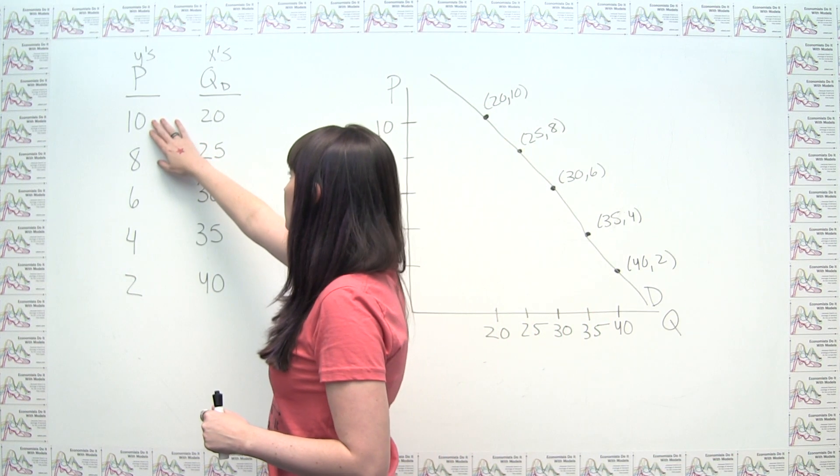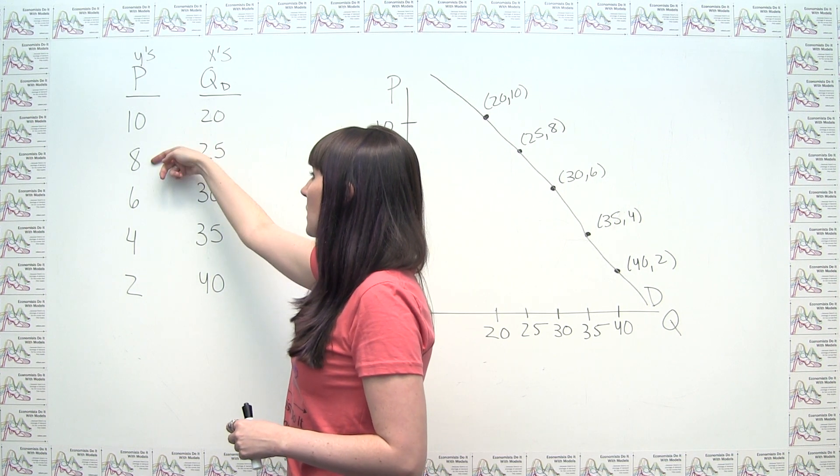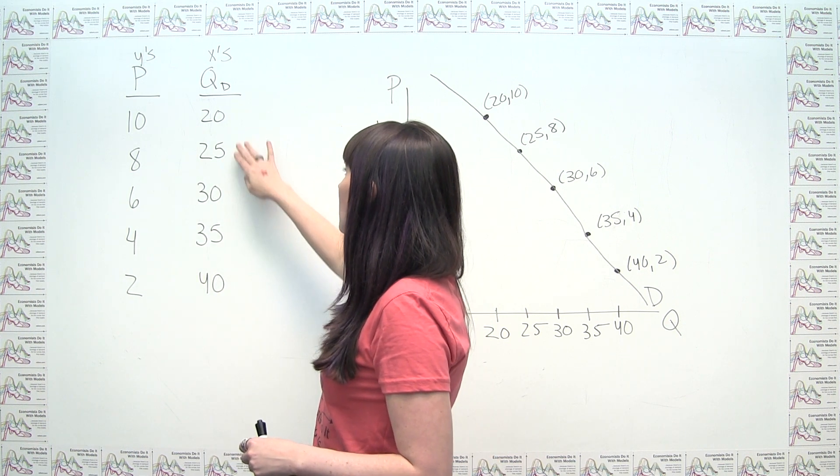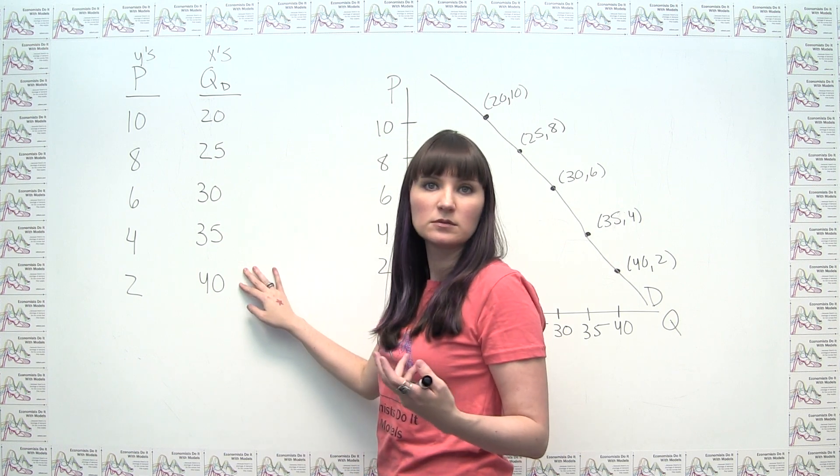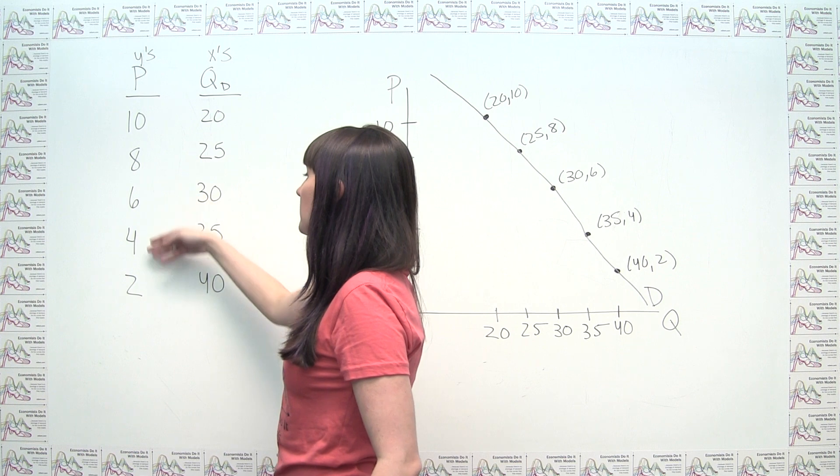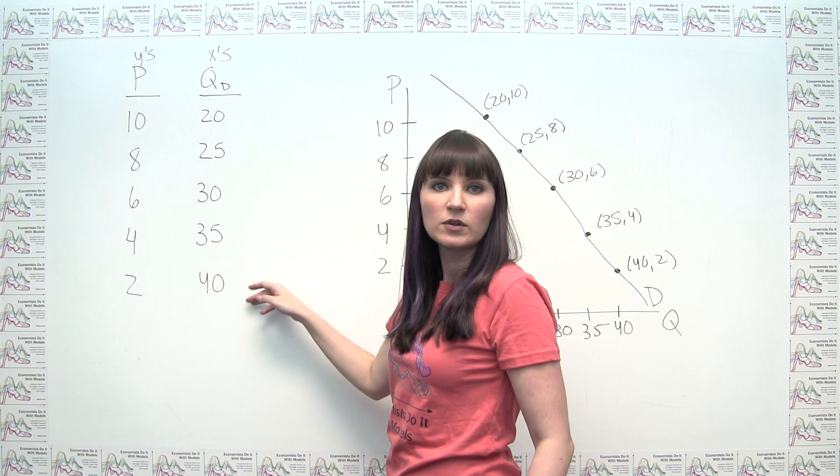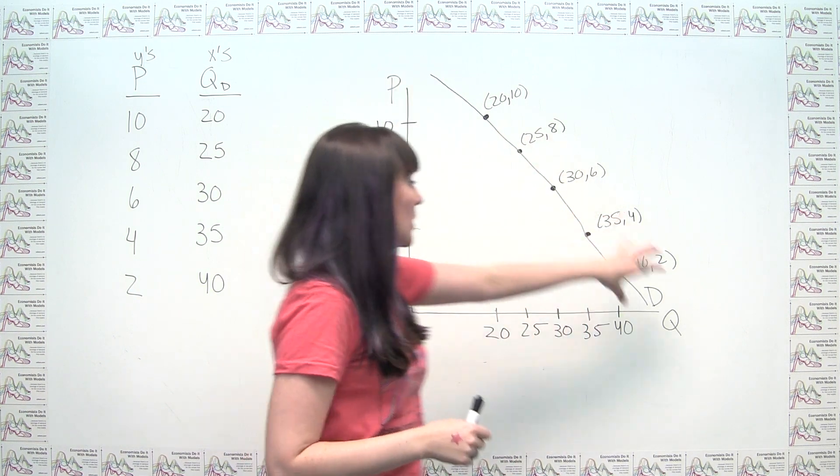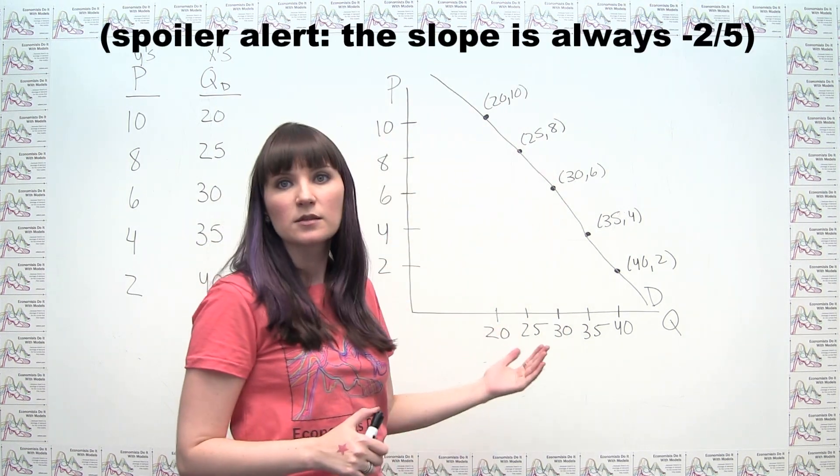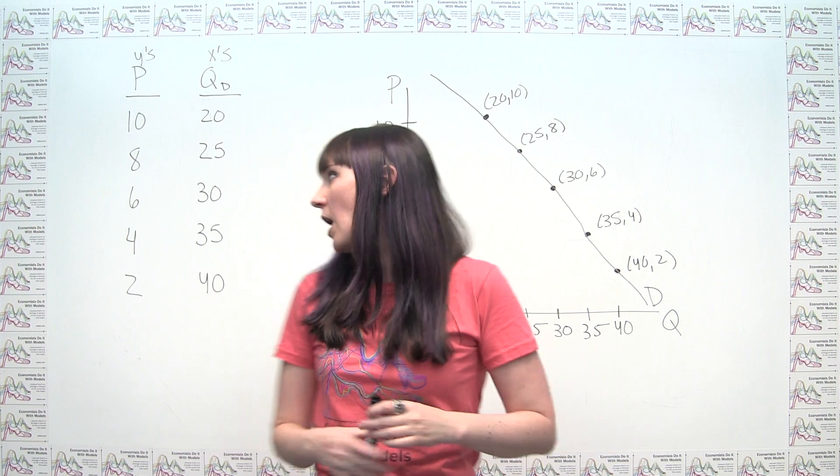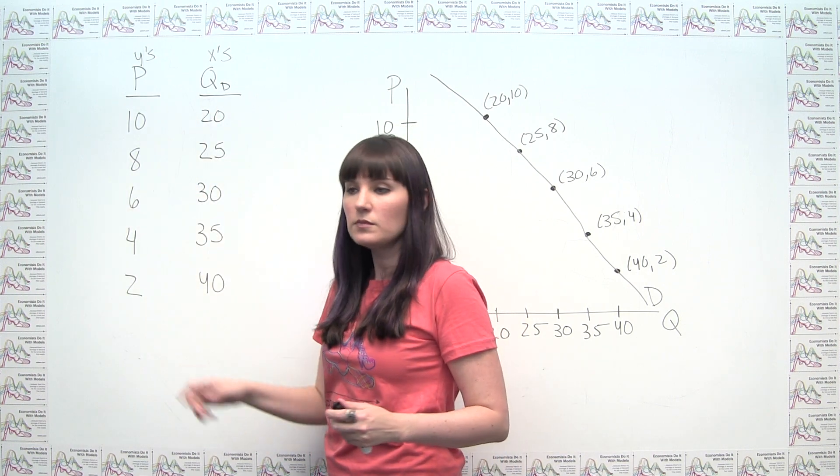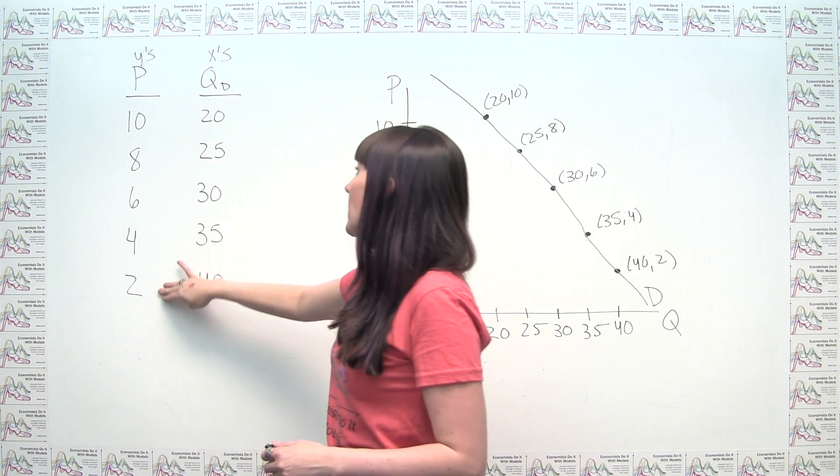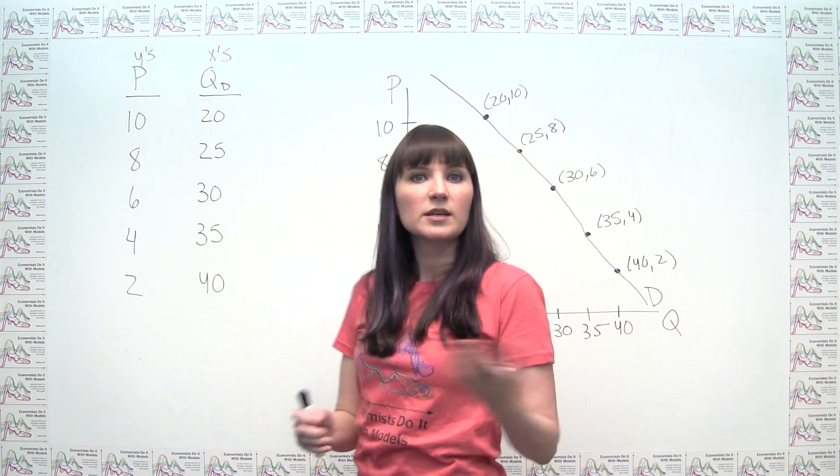And what I noticed here is that every time I moved to a new price, my price went down by 2. And every time my price went down by 2, my quantity demanded went up by the same amount. It went up by 5 each time. So I have consistent price decreases here and consistent quantity increases here. So if I were to calculate the slope, that being the change in price divided by the change in quantity in this particular context, because slope is just change in y over change in x, I would get the same number in each case. So this is always decreasing by the same amount, and this is always increasing by the same amount, which is going to give us a straight line.